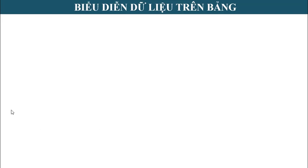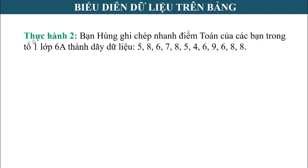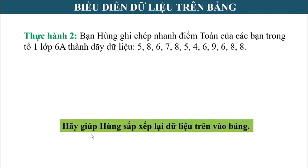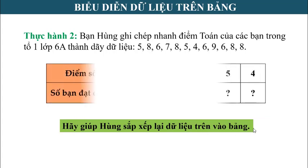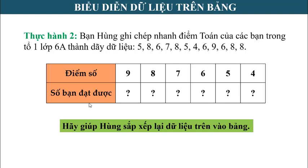Tiếp theo chúng ta thực hiện bài thực hành số 2. Bạn Hùng ghi chép nhanh điểm toán của các bạn trong tổ 1 lớp 6A thành dãy dữ liệu. Các bạn hãy giúp bạn Hùng sắp xếp lại dữ liệu vào bảng. Muốn xác định số bạn đạt điểm 9, ta quan sát dãy dữ liệu ban đầu và thấy có 1 số 9. Vậy số bạn đạt điểm 9 là 1 bạn.